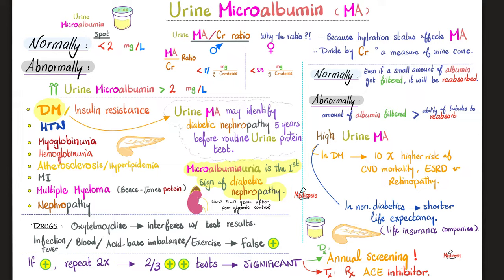What's the normal urine microalbumin? Very tiny — less than 2 mg of albumin per liter of urine. Above that, we call it microalbuminuria. Since the amount of albumin in your urine depends on your hydration status, let's try to cancel the effect of hydration by dividing the microalbumin in the urine by the creatinine in the urine to get a ratio.